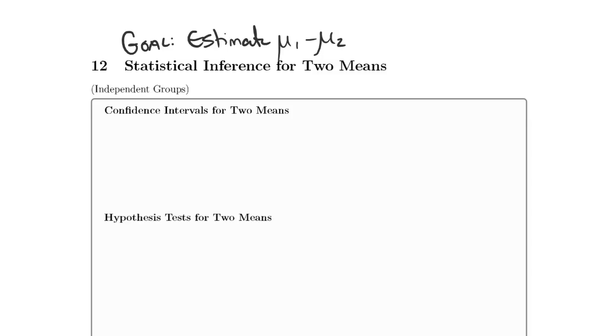Mu1 and mu2 are each means from different populations. In the confidence interval situation, our point estimate is going to be the sample mean of the first group, x1 bar minus x2 bar, the sample mean of the second group.